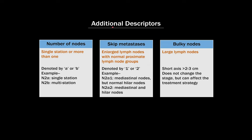There are some additional descriptors that are important to put in your report that might affect management. The first is whether it's single station or more than one. For example, if a patient had a right lung cancer with N2 nodes, is it in one station like the right lower paratracheal, or does it involve multiple stations like lower right paratracheal and upper paratracheal? You might see this denoted by A for single station or B for multi-station. Skip metastases are another important thing to describe — this is when you have enlarged lymph nodes with normal proximate lymph node groups. For example, in a patient with a right paratracheal lymph node, it would be a skip metastasis if the right hilar and peribronchial nodes were not involved.